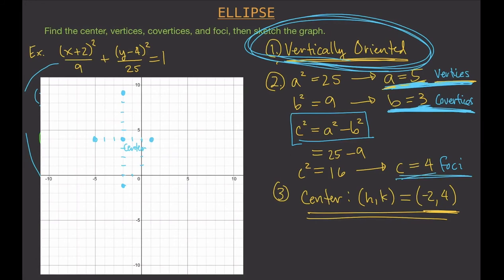The last points to plot are the foci. c = 4, so the foci are 4 units away from the center. Since our ellipse is vertically oriented, we go 4 units up and 4 units down. Those are our foci, marked in a different color.